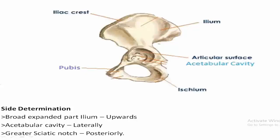Now we also have to determine the side of the bone, so first of all, about side determination. The broad expanded part — ilium — faces upward. The acetabular cavity lies laterally, which is an articular cavity, and there is a large notch called the greater sciatic notch, which lies posteriorly. These are the 3 important side determination points through which we can determine whether the bone is right-sided or left-sided.